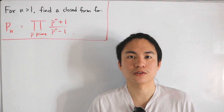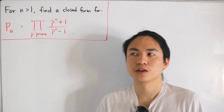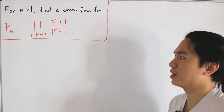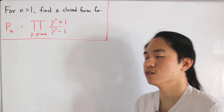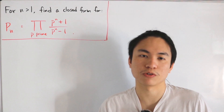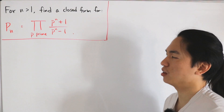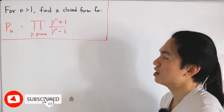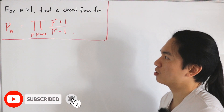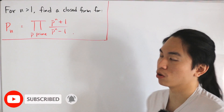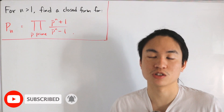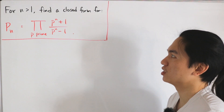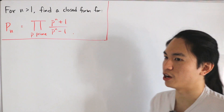Welcome back. Here is a closed form we would like to solve for, valid for n strictly greater than one — so we're going through the natural numbers excluding one. We want to find a closed form for P_n, defined as the product over all primes p of (p^(n+1) + 1) divided by (p^(n+1) - 1).